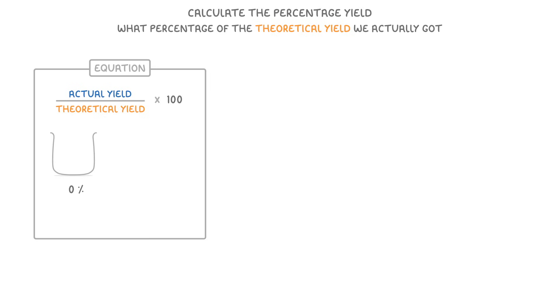So it can range from 0% if we don't get any product, all the way to 100% if we get all the product that we predicted.